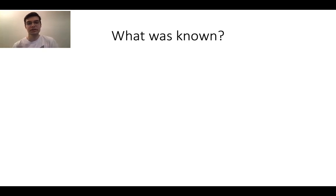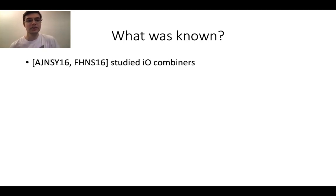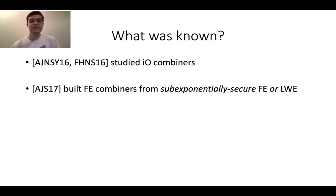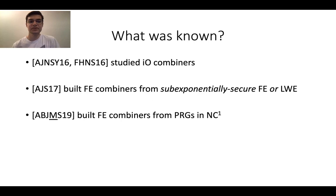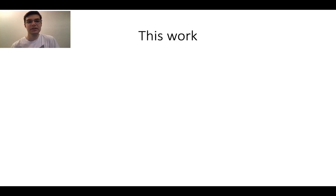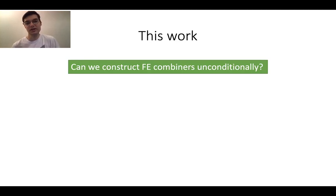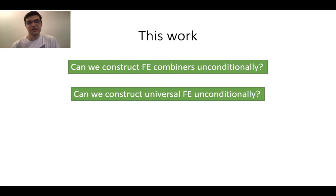Prior to our work, Arunth et al. and Fischlin et al. studied the related problem of IO combiners. Then Arunth, Jain, and Sahai built FE combiners from sub-exponentially secure FE or LWE, and Arunth et al. built FE combiners assuming pseudorandom generators in NC1. However, the ultimate question — can we construct FE combiners unconditionally — remained open. In this work, we ask this question and the related question of whether we can construct universal functional encryption unconditionally. The answer is yes.